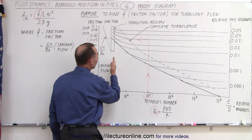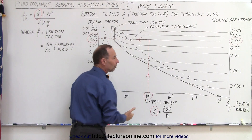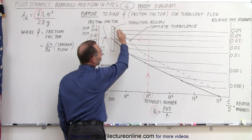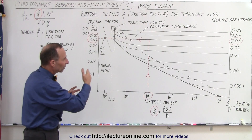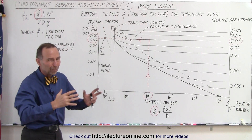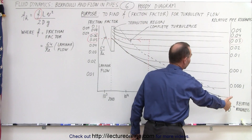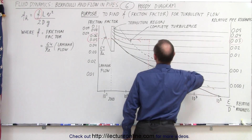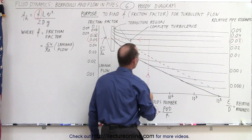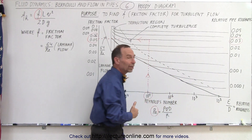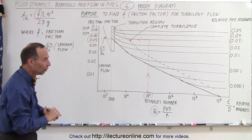Notice that not until the Reynolds number gets well above the 2000 range do we have what we call complete turbulence. Between 2000 and some higher value, we have what we call transition, and it depends upon the relative pipe roughness. If we have greater roughness, the turbulence happens quicker. If we have less roughness on the inside of the pipe, complete turbulence happens at a much greater Reynolds number.